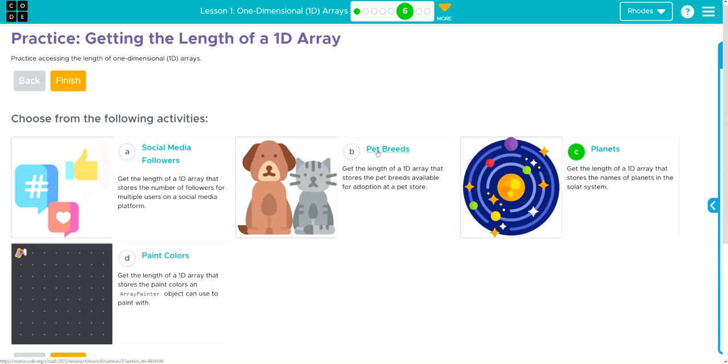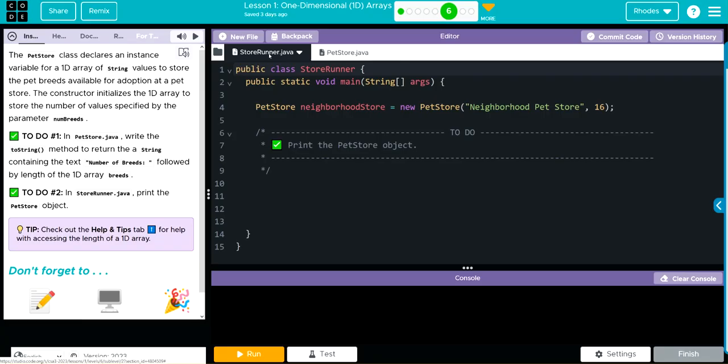Let's see what we have to code up. The pet store class declares an instance variable for a 1D array of string values to store the pet breeds available for adoption at a pet store.